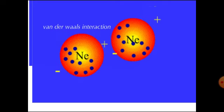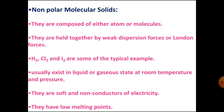Here the constituent particles are atoms or molecules. They are held together by weak dispersion or London forces. Examples include hydrogen, fluorine, and iodine. Usually they exist as liquid or in gaseous state at room temperature and pressure. They are soft and non-conductors of electricity due to the absence of ions. They have a low melting point. One more example of a non-polar molecular solid is dry ice, that is solid carbon dioxide.